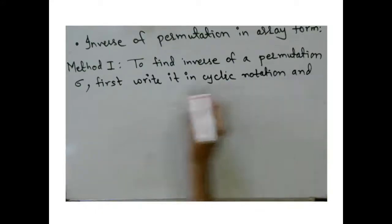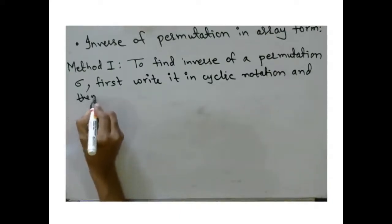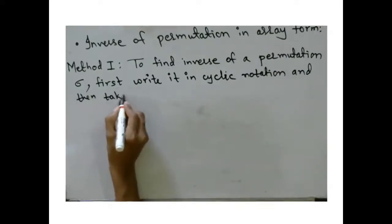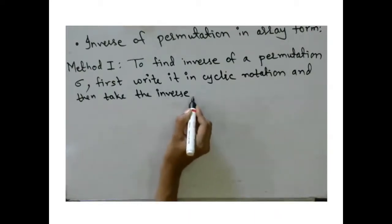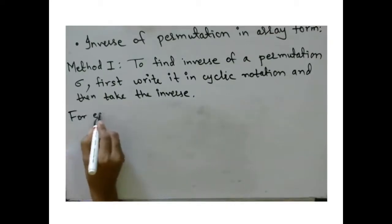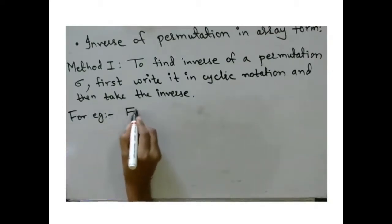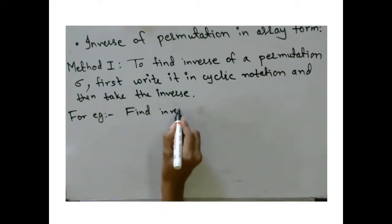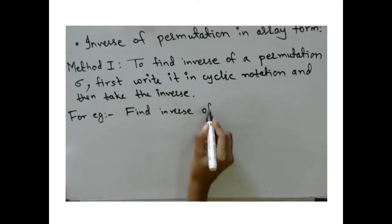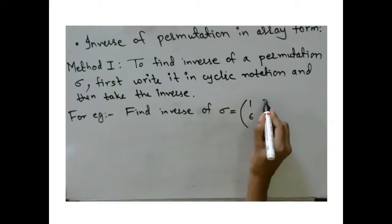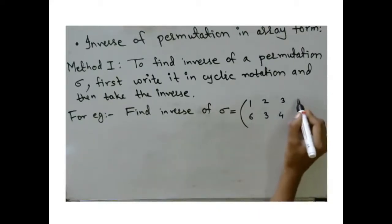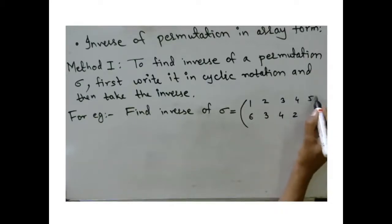For example, to find the inverse of a permutation sigma in S6, given as 1 maps to 6, 2 maps to 3, 3 maps to 4, 4 maps to 2, 5 maps to 1, and 6 maps to 5.